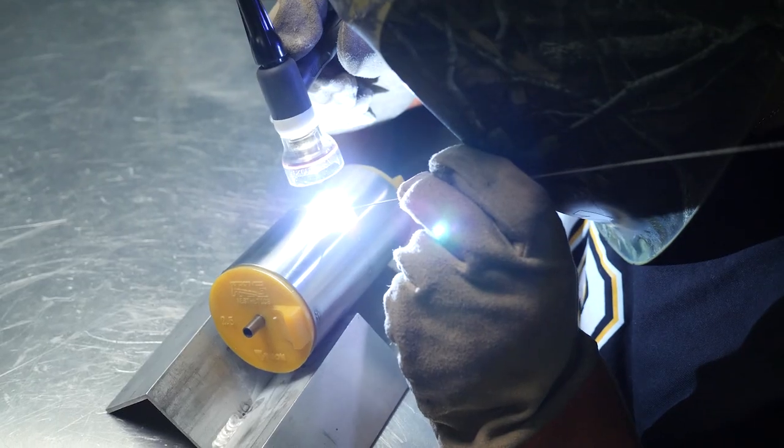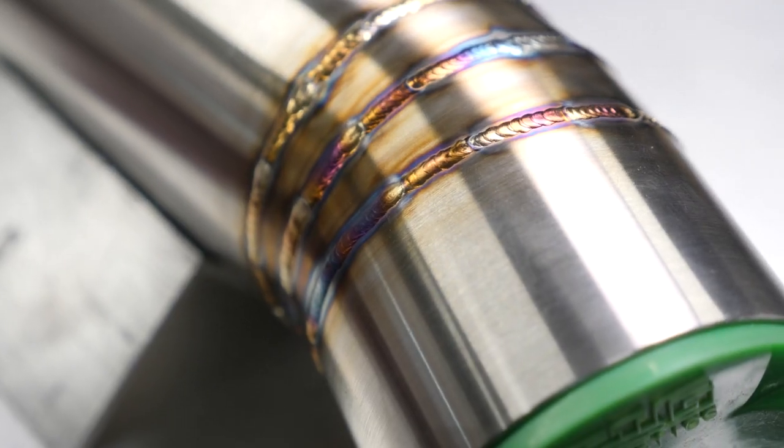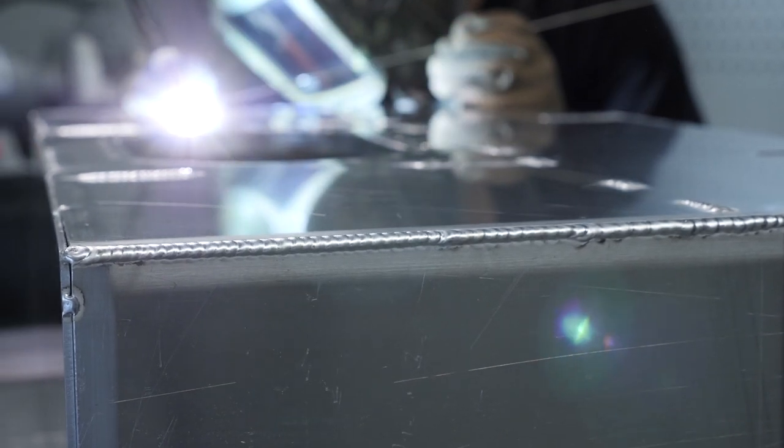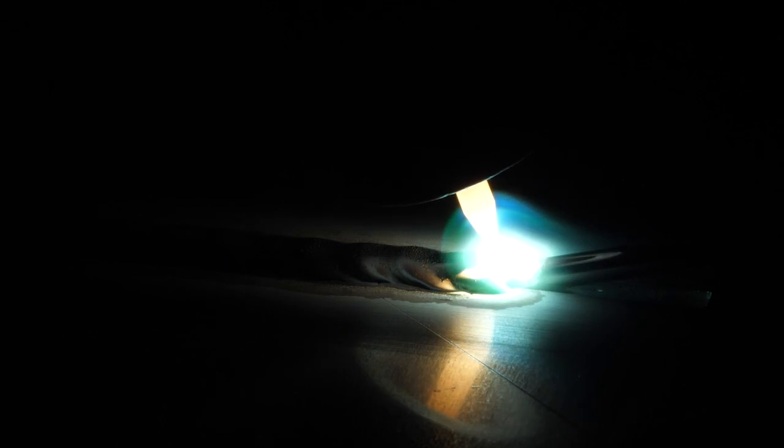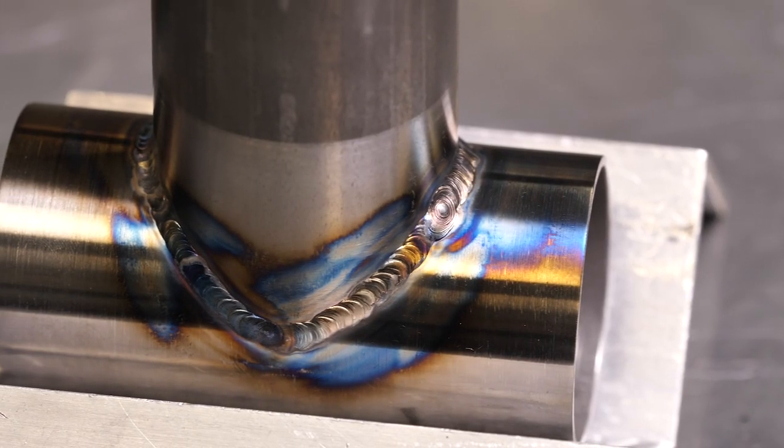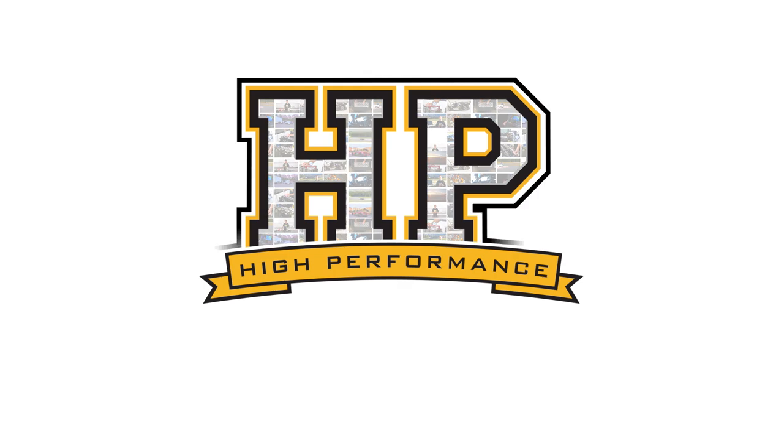Almost all metals can be TIG welded but the procedure for producing a high quality professional weld differs a little between material types and each requires a few setup and setting changes which we've outlined in detail in the material specific section of this course.